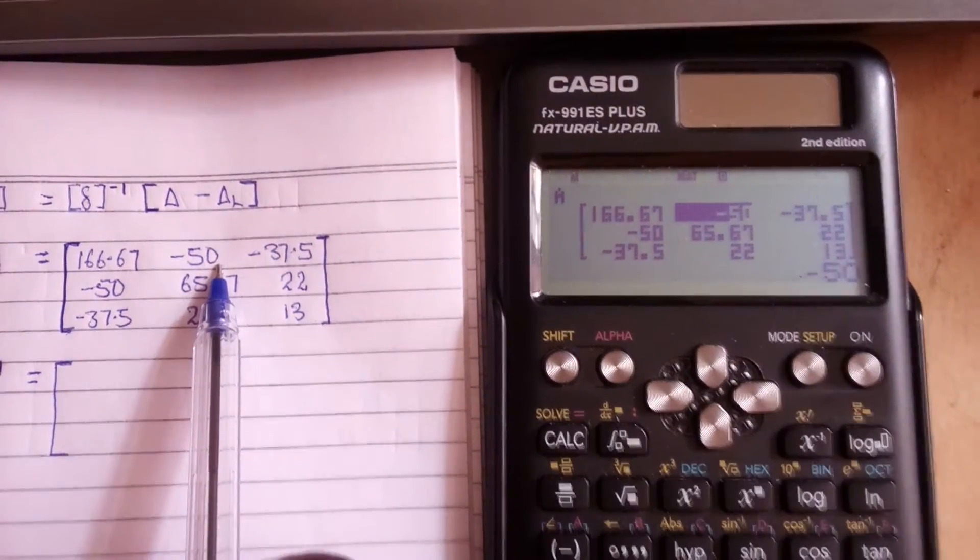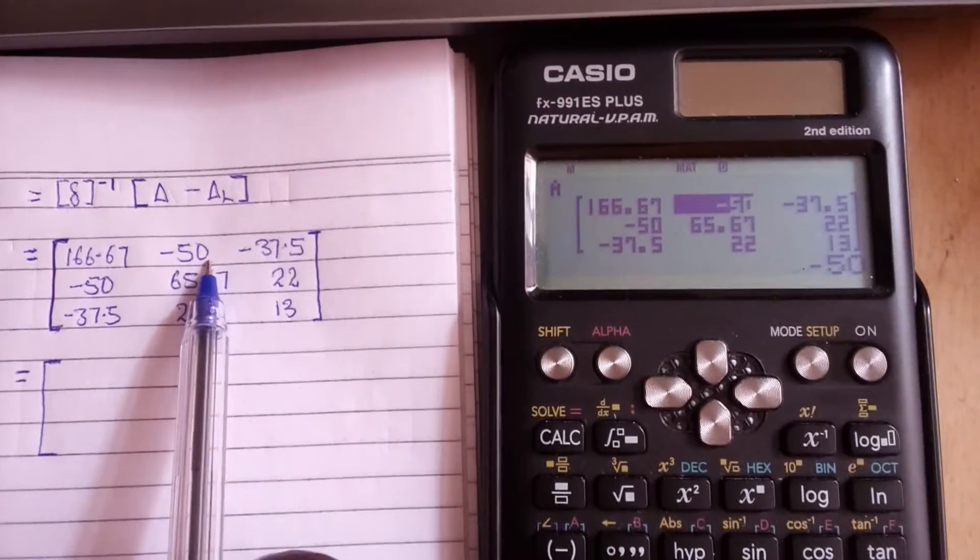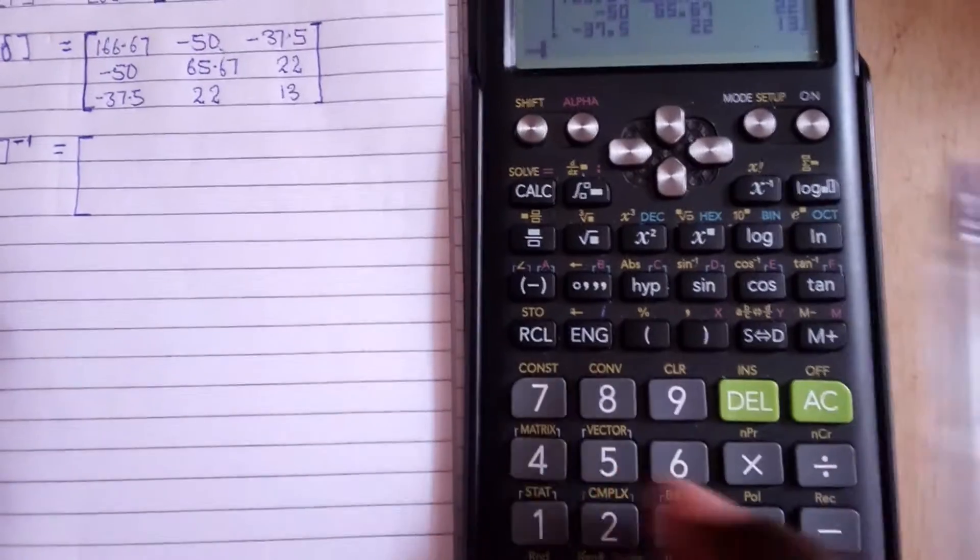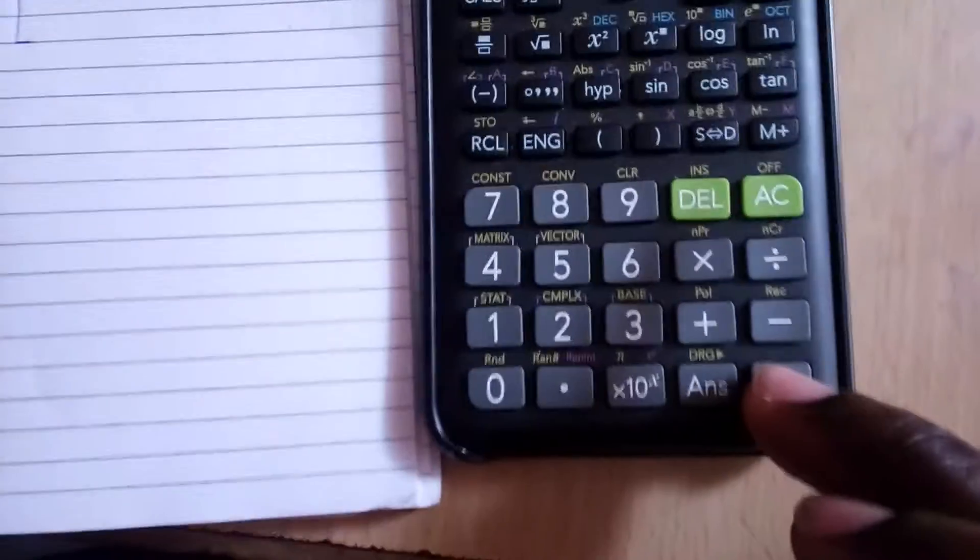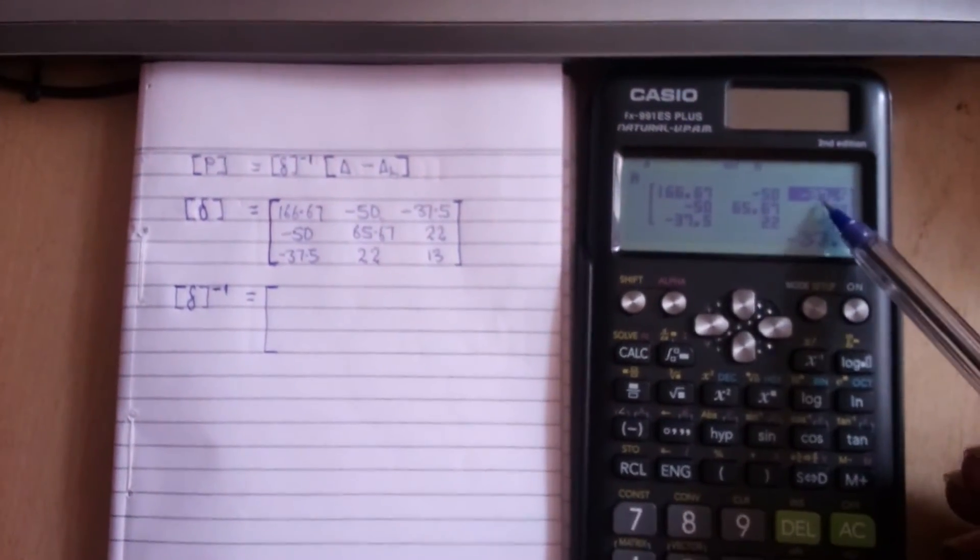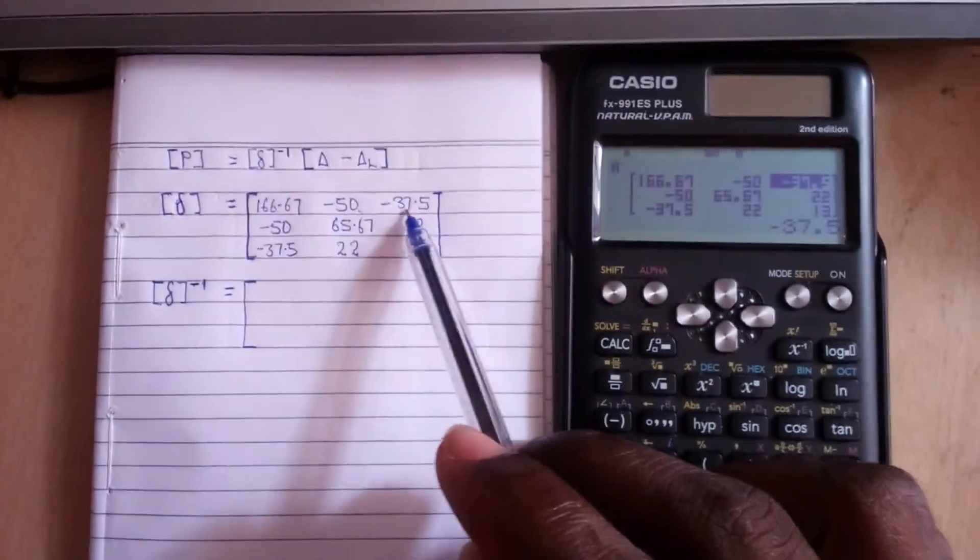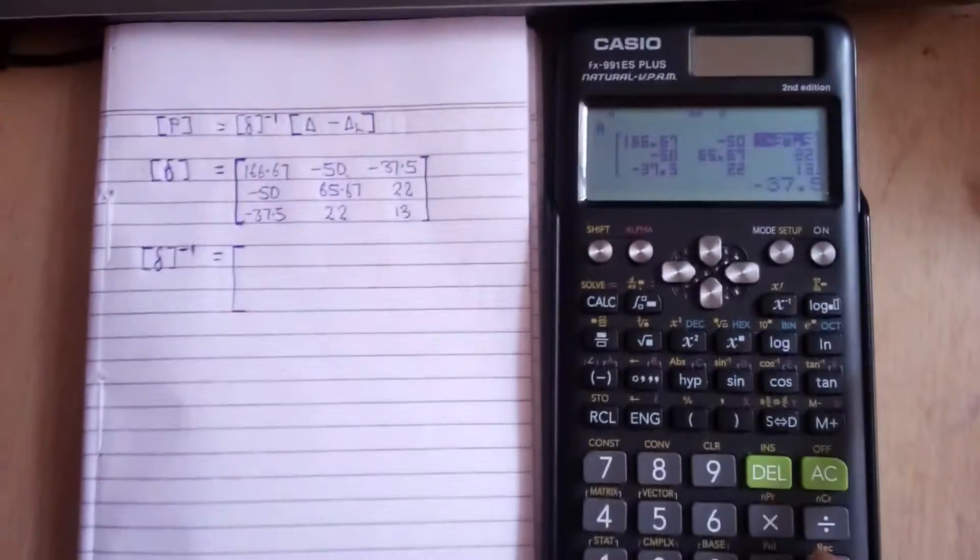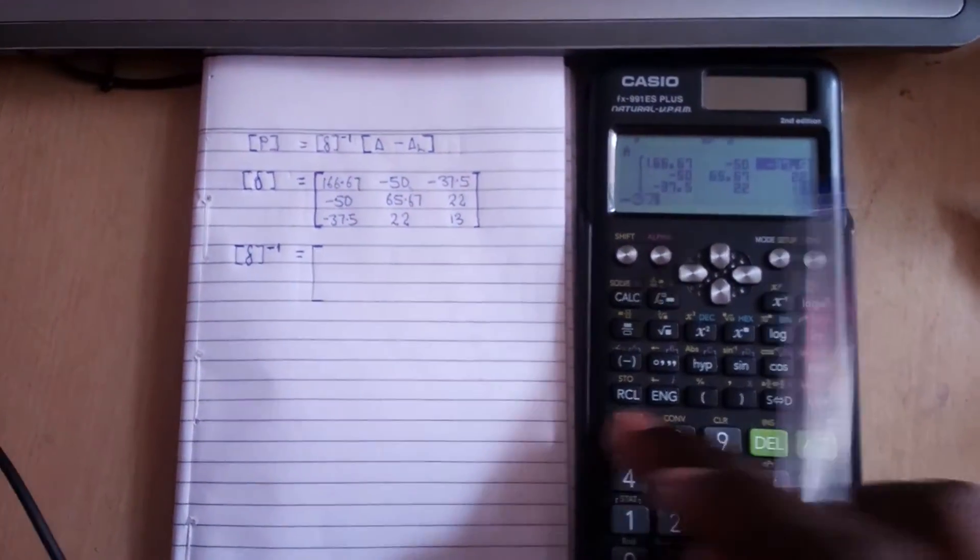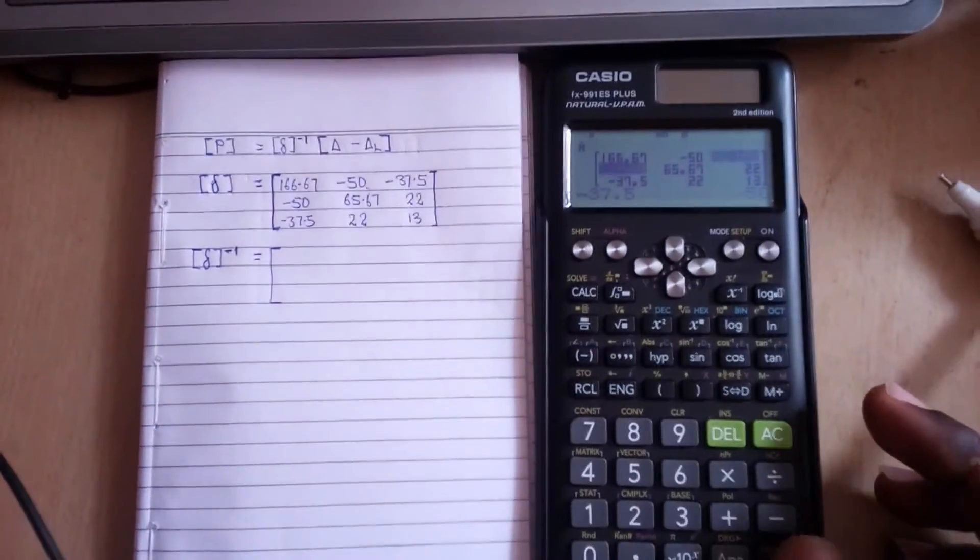Now that I've entered this, the cursor has moved to column 2 row 1. I'm going to type minus 50, equal to. Once I do that it moves to the next one, minus 37.5, equal to.